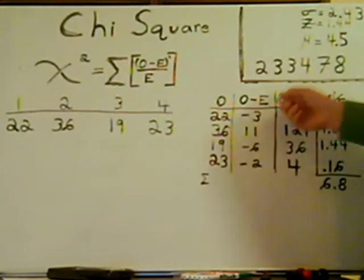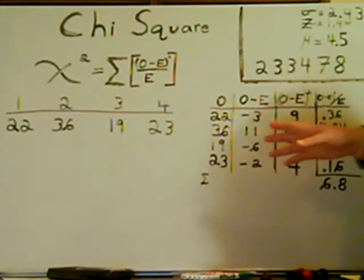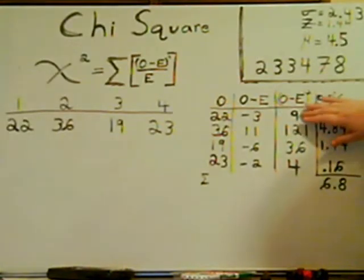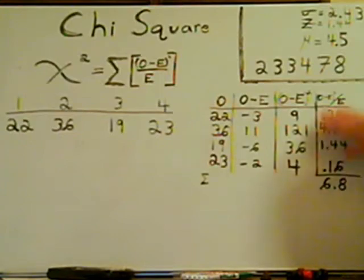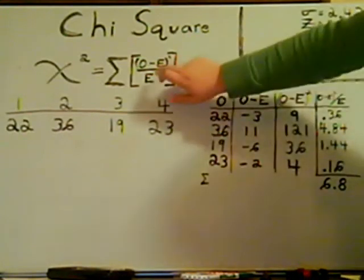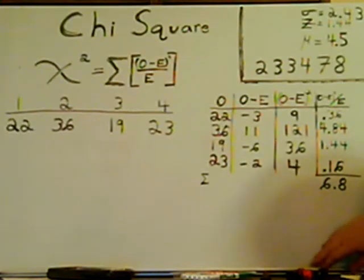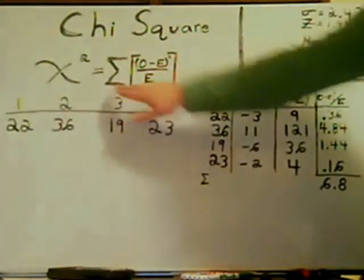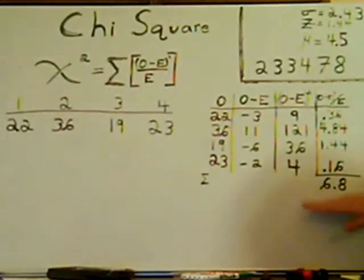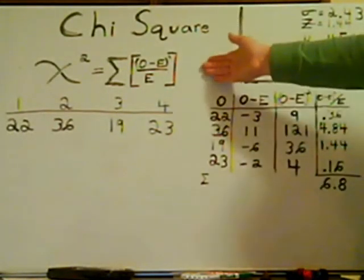The next step is to square all those numbers. So you square that and you get nine, one hundred and twenty-one, thirty-six, and four. After that, we're not done yet because we still got the denominator. You're going to go ahead and divide it by the expected, which was twenty-five. You come up with point-three-six, four-point-eight-four, one-point-four-four, and point-one-six. Now, as per the sigma, you add all those up, and you get six-point-eight. That is your chi-square statistic.